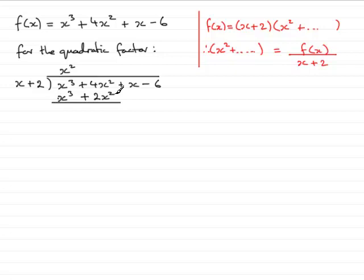We subtract to find the remainder: 4x² - 2x² = 2x², and x³ - x³ = 0. Next, bring down the x term.